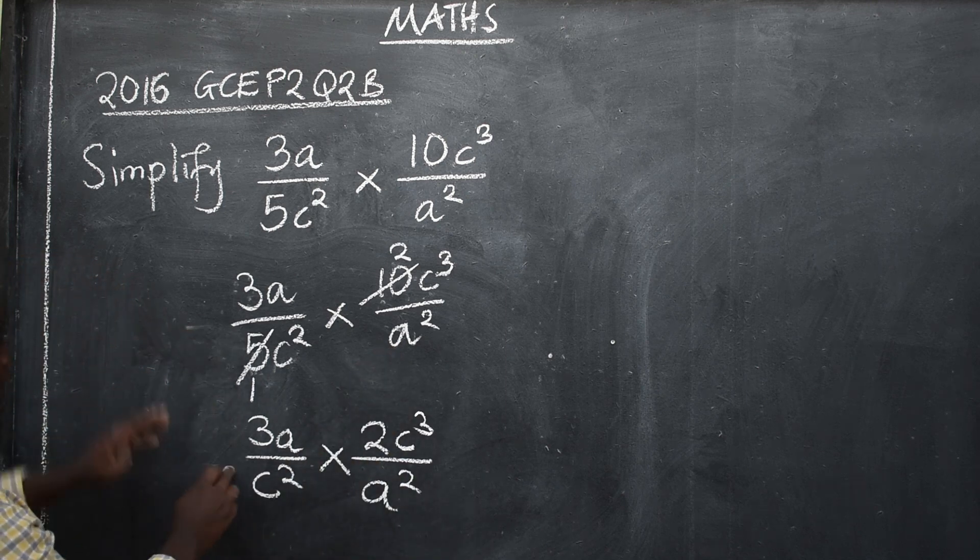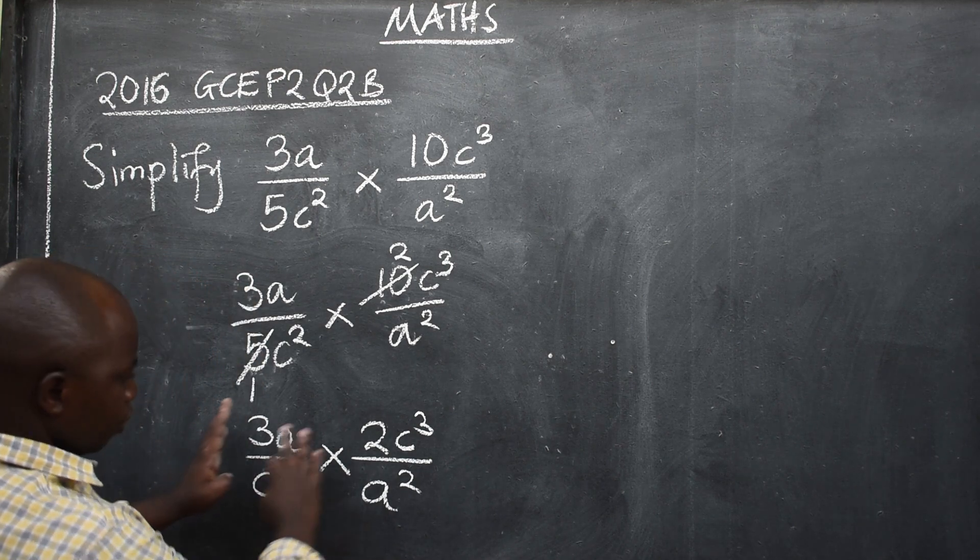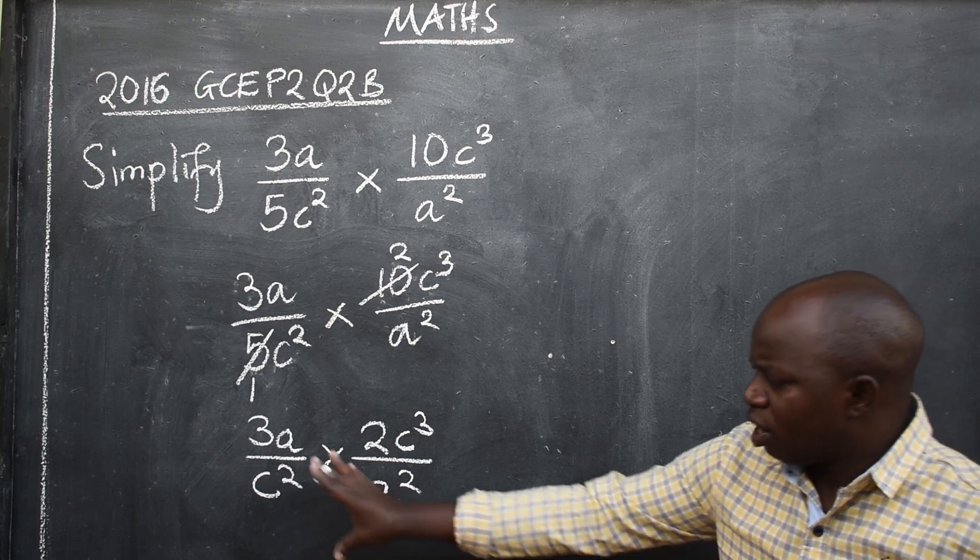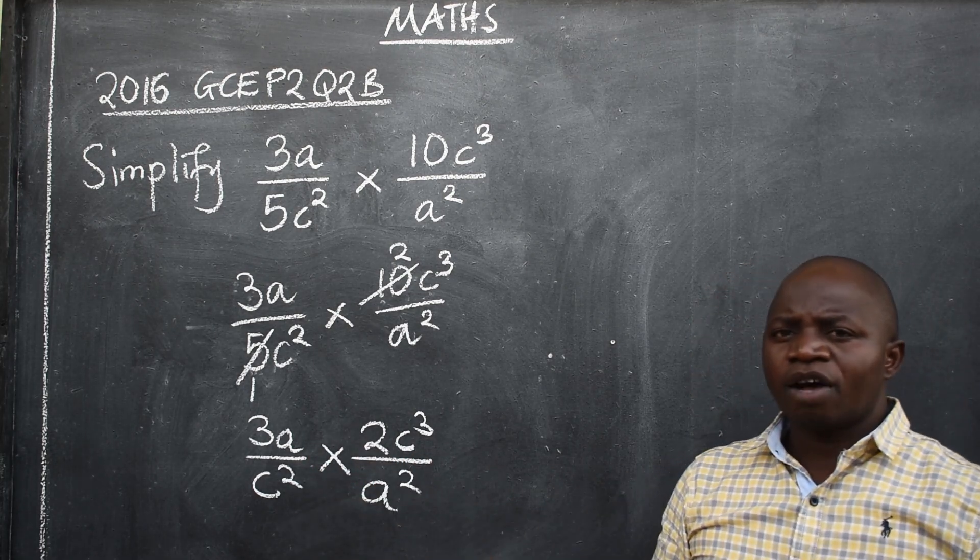Don't be putting equal sign here. You are simplifying, not solving. So from there, this is what has remained. What next? I'm done with numbers. I will go to variables.